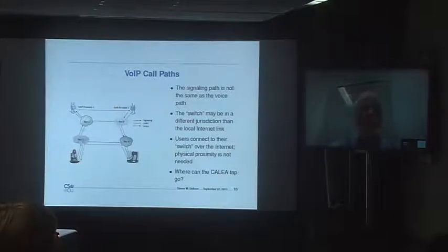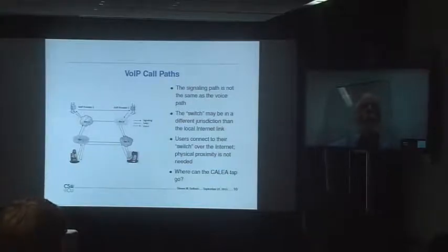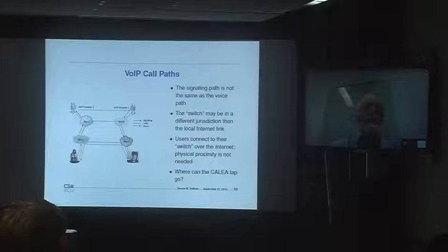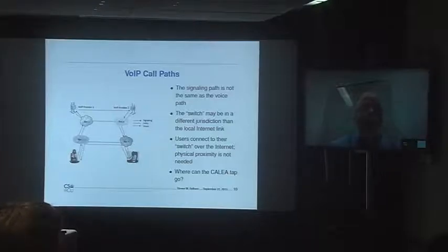Even if they could, the signaling path goes from me over the internet to my provider in Switzerland, who contacts a provider in China talking to a recipient in Argentina — but the voice path is actually going directly from me over the internet to Argentina. The VoIP providers aren't part of the voice path. So where do you put the tap? Even if you could tap in Switzerland or Beijing, the voice conversation itself is not going there. You don't need the physical proximity that CALEA assumed.